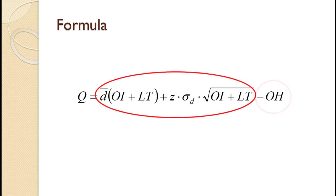This formula is somewhat misleading. In practice, the bulk of the formula would be calculated once and written on the inventory bin or recorded in the database. The part circled in red on the slide represents the desired stocking level. At each reorder, the clerk would simply count the number in the bin and subtract it from this quantity to get the order quantity.